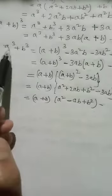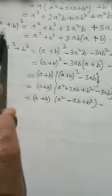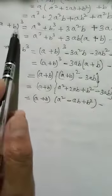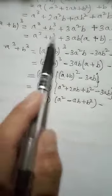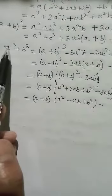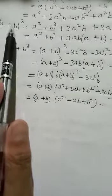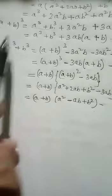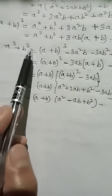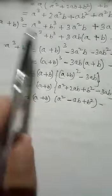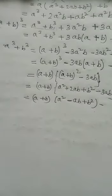So in summary, a³ + b³ can be written in three forms, all derived from (a+b)³. When they say expand, use the first two forms; when they say factorize, use the factored form. Note that (a+b)³ and a³ + b³ are not the same, but they come from one another.